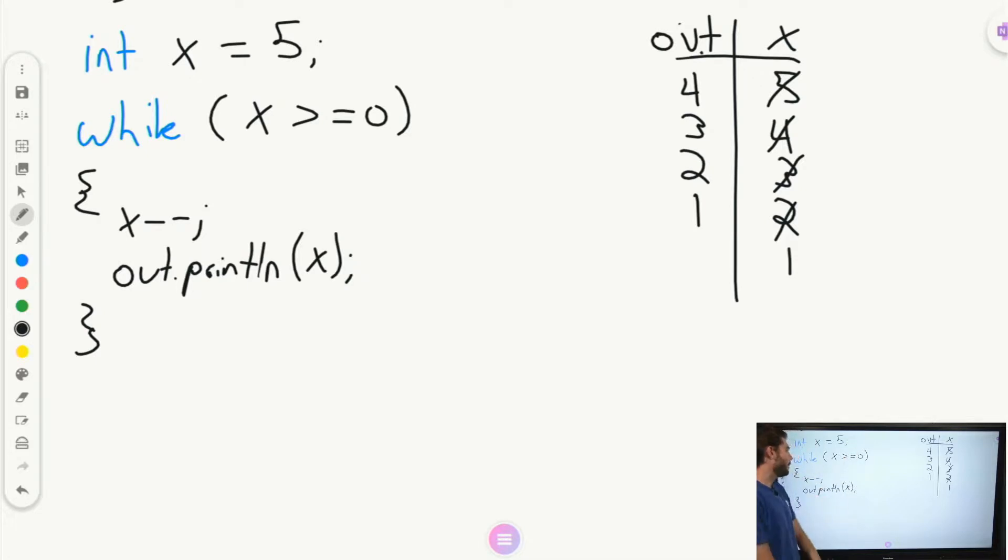Is 1 bigger, greater than or equal to 0? Yes, it is. So I'm going to decrement on the next line. I'm going to print that out. And now, is 0 bigger or greater or equal to 0? Yes, 0 is equal to 0. So I'm going to step in one more time. And I'm going to get negative 1. And I'm going to print out negative 1.